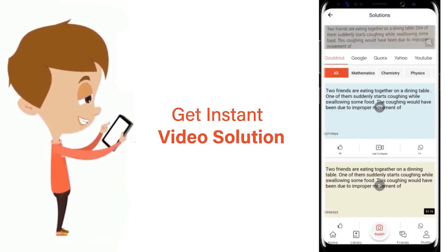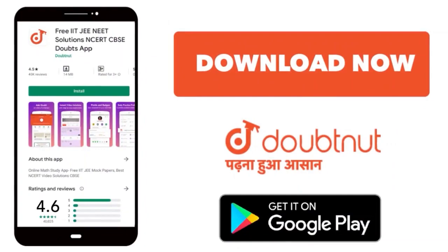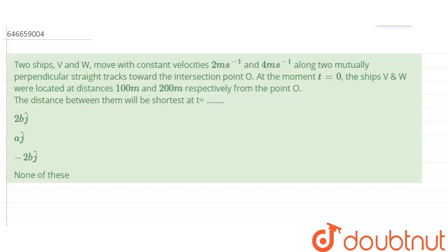The question is: two ships V and W move with constant velocities 2 meters per second and 4 meters per second along two mutually perpendicular straight tracks towards the intersection point O. At t=0, ship V and W were located at distances 100 meters and 200 meters respectively from point O. We have to find the time at which the distance between them will be shortest.